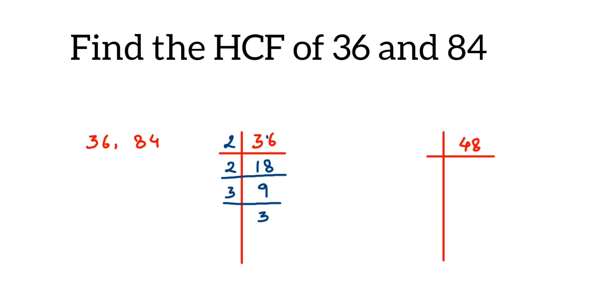For 48: 2 into 48 is 24, 2 into 24 is 12, 2 into 12 is 6, 2 into 6 is 3, and 3 into 3 is 1. Now we're going to express this in prime factors.